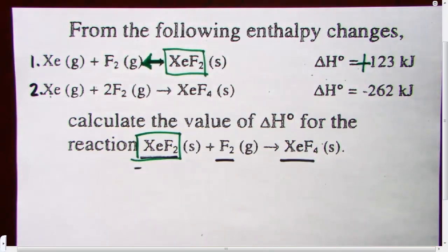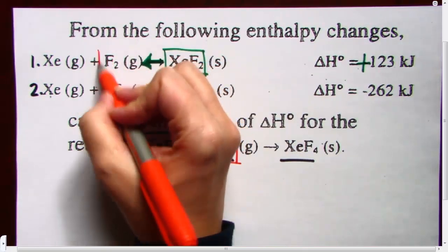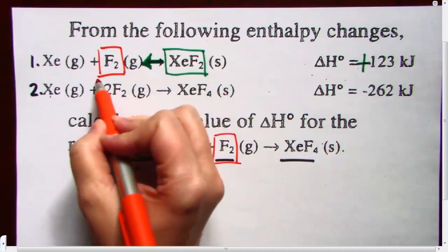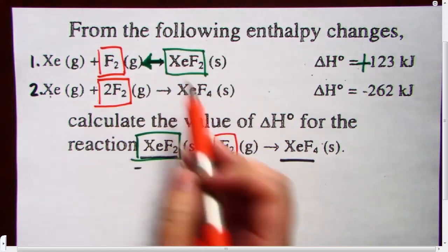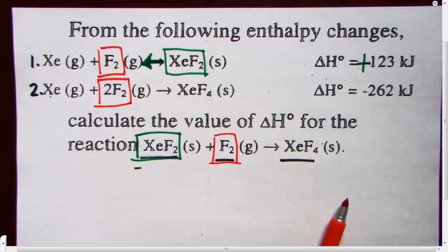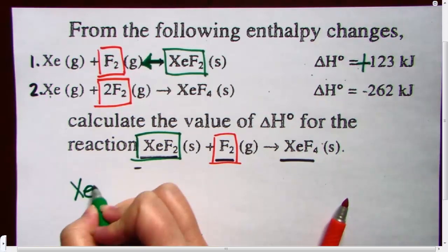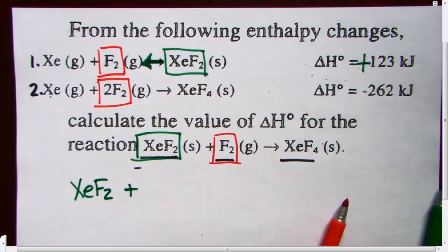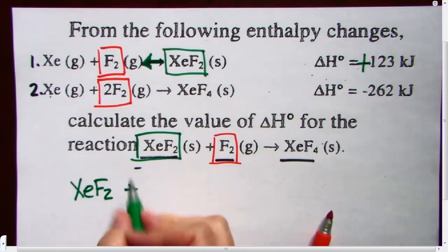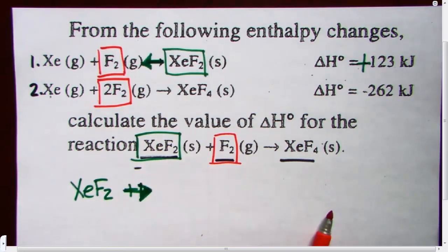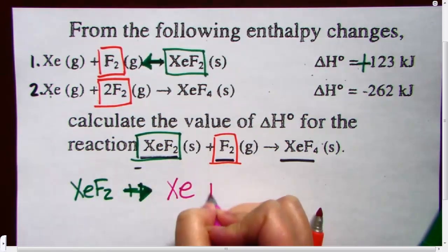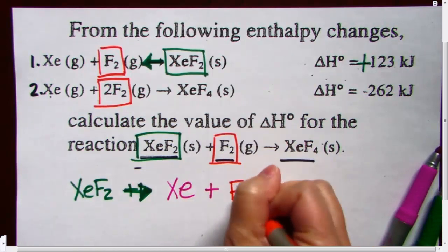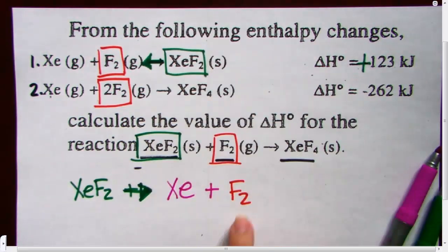So that's XeF2. Let's look at F2 and find it. We've got F2 up here and we've got F2 down here. But I've changed this arrow, so let's put them on opposite sides. This starts to get a little confusing, so sometimes it can be easier to go ahead and rewrite the equations. So we have XeF2 yields XE plus F2. So now this is equation number 1 rewritten.